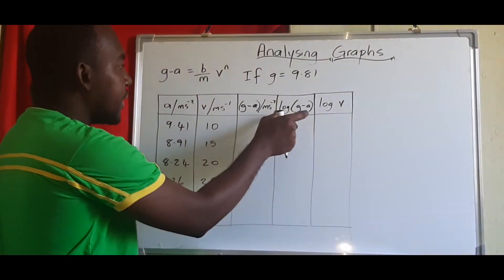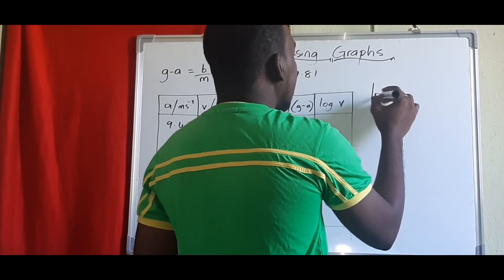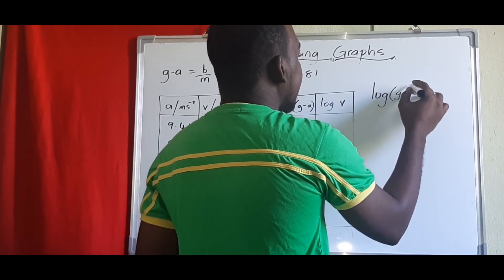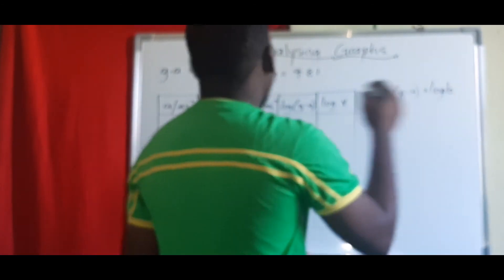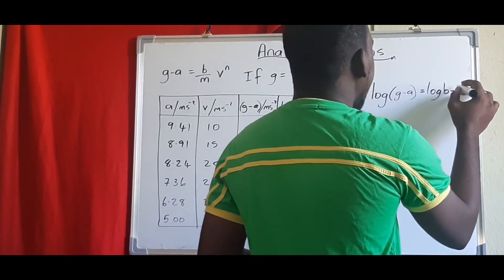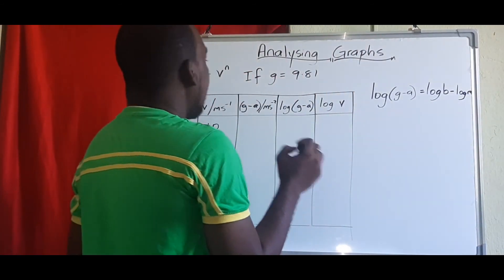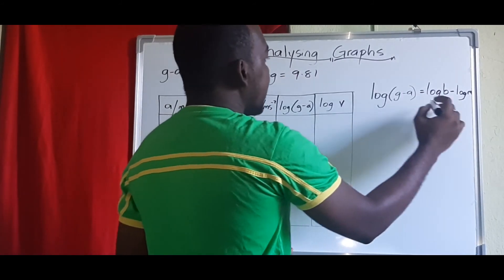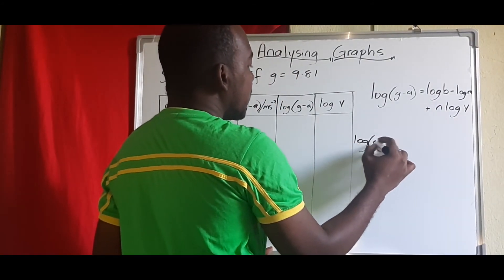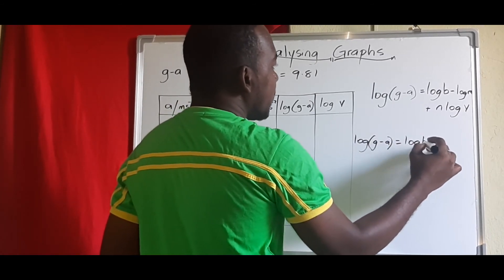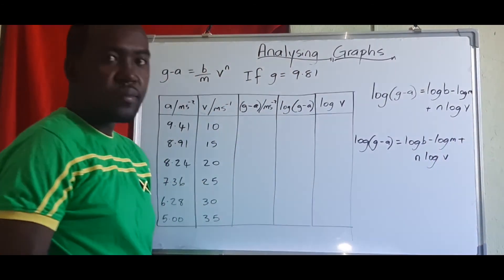So because they said log g minus a, that means we're not going to split up g minus a. So we have log g minus a. And that's equal to, we're logging this, so it would be log b, and because it's being divided, then that means it'd be minus log m. And then it's been multiplied, so that means plus, we take down the n log v. So in total, we'll get log g minus a equals log b minus log m plus n log v.